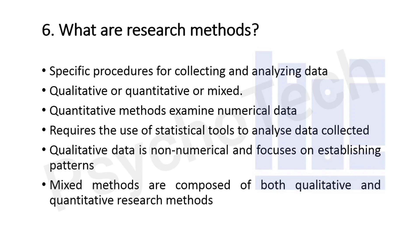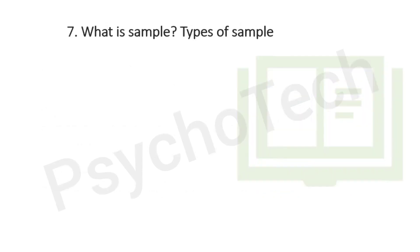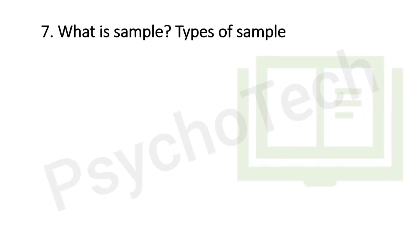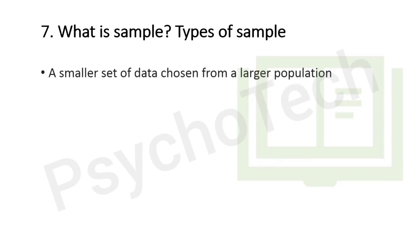The next question is: what is a sample and what are the types of sample? A sample can be defined as a smaller set of data that a researcher chooses from a larger population using a predefined selection method. Examining the sample provides insights that the researcher can apply to the entire population.